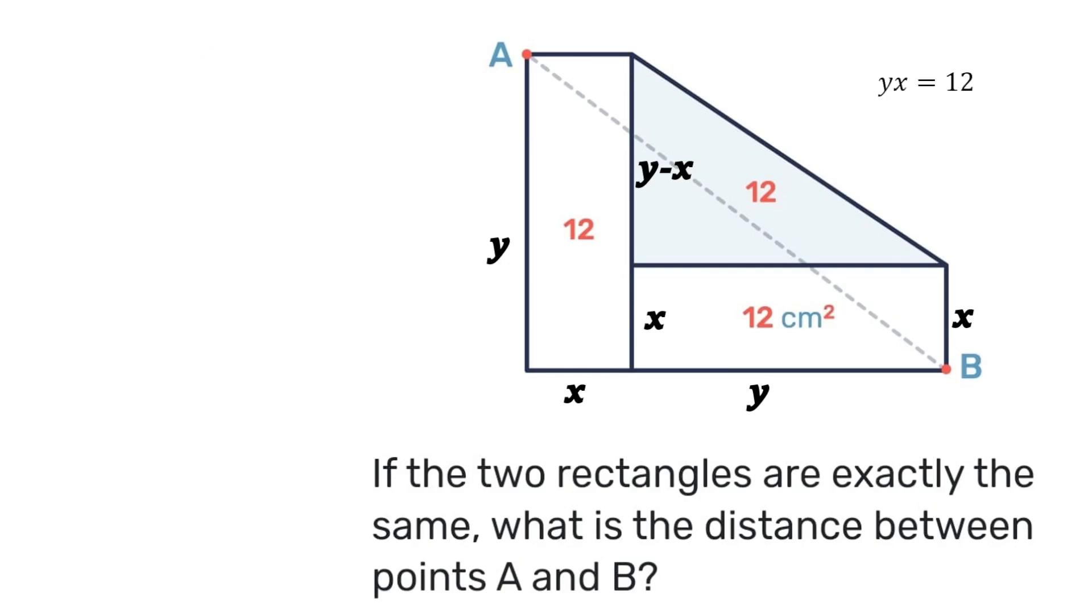So next how about the area of the triangle? Well the area of a triangle is half base times height where in this case the base is y and the height is y minus x and we know that that will be equal to 12. I can transpose that 2 and instead of dividing by the 2 I'll multiply by the 2 so 12 times 2 gives me 24. Then expanding brackets I'll have y squared minus yx is equal to 24.